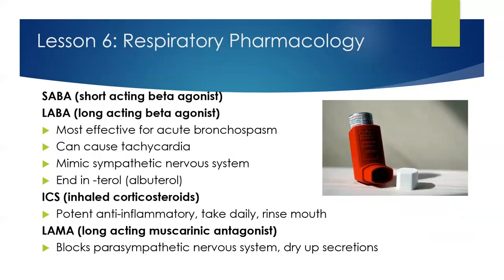When looking at the pharmacology of respiratory conditions, it's important to remember the SABAs and the LABAs — the short-acting beta agonists and the long-acting beta agonists. Both medications are bronchodilators which work by widening the airways because they stimulate the fight-or-flight response of the nervous system. SABAs would be used in acute episodes of shortness of breath and wheezing because they provide the fastest relief. Both SABAs and LABAs can increase the patient's heart rate, so it's important to tell the patient that may be a side effect.